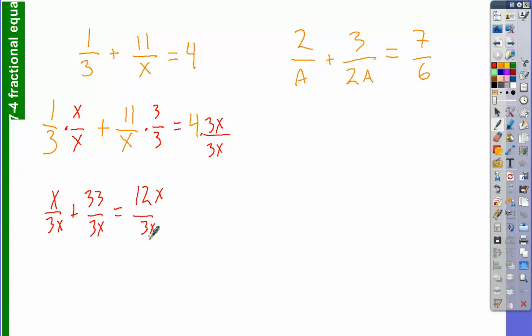Wait, how? The answer is 4. Hold on. Relax. So I know that when my common denominators, or when my denominators are common, what do I do with the numerators in an addition problem? Just delete, just add them. Just add them. So I know that x plus 33 is equal to 12x, right? So I know that x plus 33 is equal to 12x.